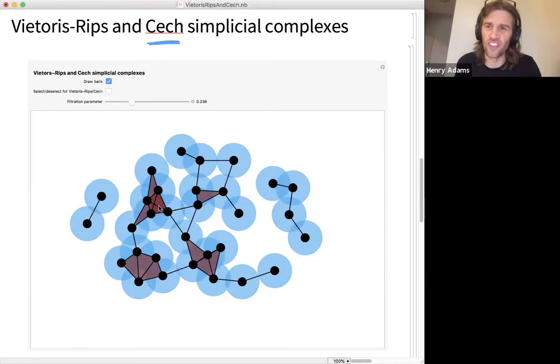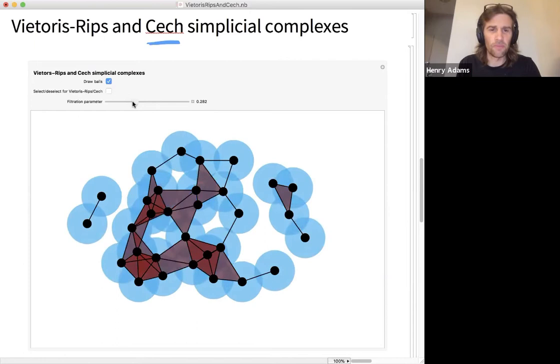And it is the case that whenever four balls have a point of quadruple intersection, you throw in a tetrahedron, which here looks a little weird because we have data in the plane. Why are we throwing in tetrahedra? Well, there's this nice mathematical property that the union of the blue balls is the same shape. It's homotopy equivalent to this Čech complex. So you could shrink the blue balls down onto the red and black Čech complex without tearing anything, giving you this homotopy equivalence.